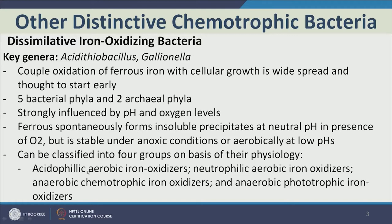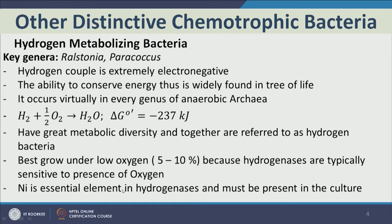Iron-oxidizing bacteria can be classified into four groups based on their physiology: acidophilic aerobic iron oxidizers — if aerobic, they must be acidophilic, otherwise chemistry will drive the iron oxidation; neutrophilic aerobic iron oxidizers, which are very rare; anaerobic chemotrophic iron oxidizers; and anaerobic phototrophic iron oxidizers.